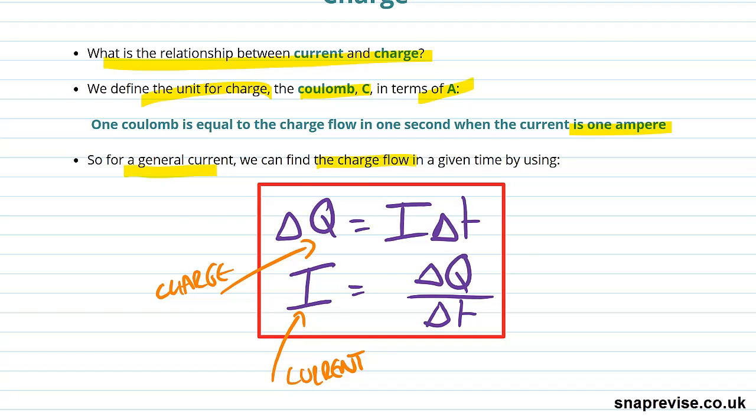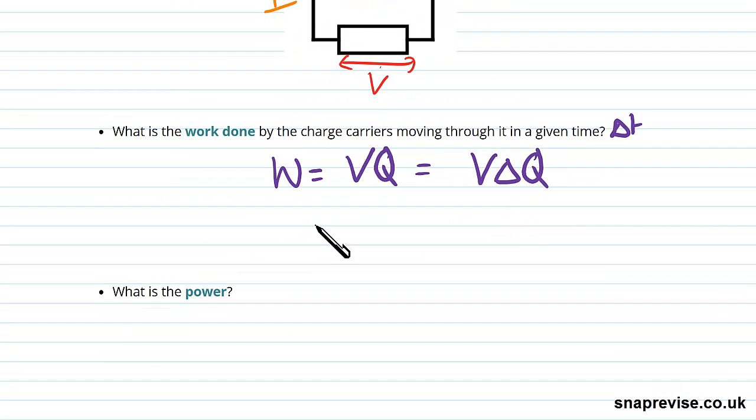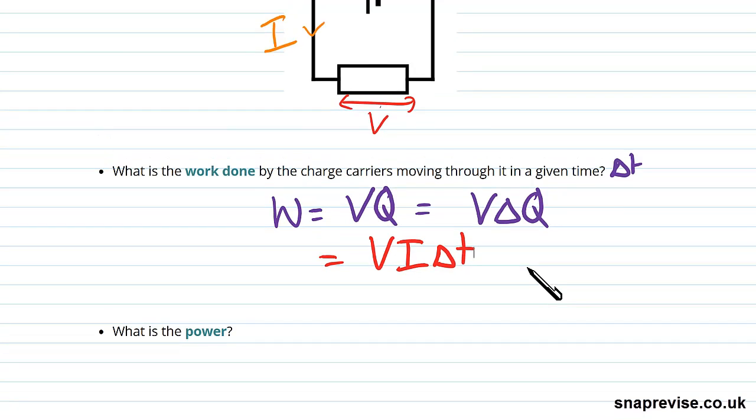So we can write W as V I Delta T. You take your potential difference, multiply it by your current, multiply it by the amount of time you're interested in, and that tells you the work done by charge carriers in that time.